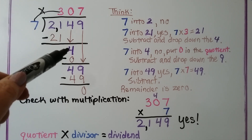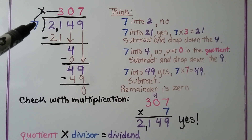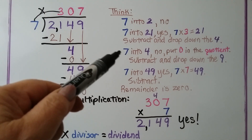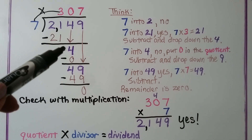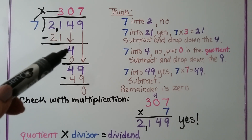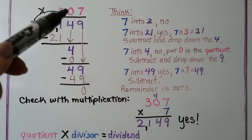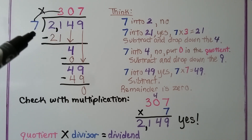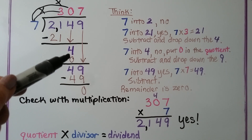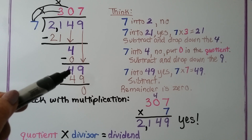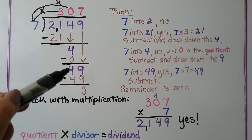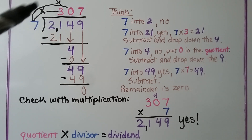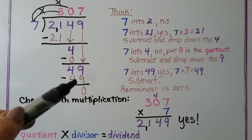Now it's the 4's turn to come down. But when we say, can 7 fit into 4? No, it can't. And it's not the 9's turn to come down yet. So how many times can 7 fit into 4? Zero. We put a 0 here as a placeholder, and 7 times 0 is 0. We do our subtraction, drop the 4 down. Now it is the 9's turn to come down. 7 can fit into 49 seven times, and 7 times 7 is 49.